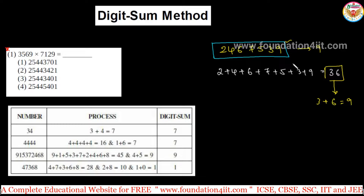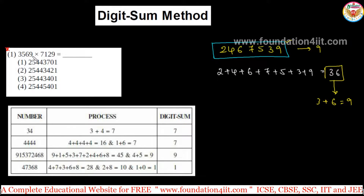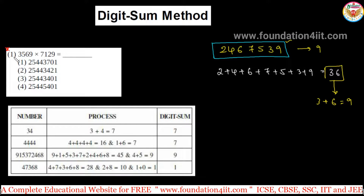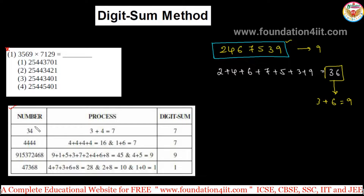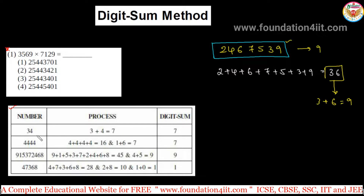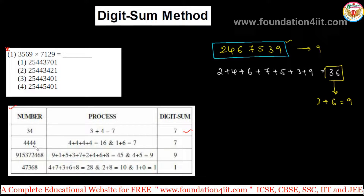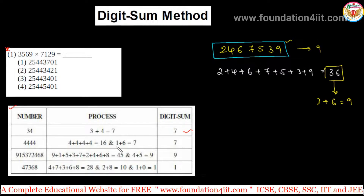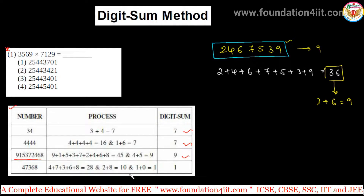Same way, for whatever numbers are given — like 3569 and 7129 — individually find the digit sum. You can see examples in this table: 34, so 3 plus 4 is 7, so the digit sum of 34 is 7. For 444, adding all gives 12, and 1 plus 6 is 7. Similarly for this bigger number, we got 9.